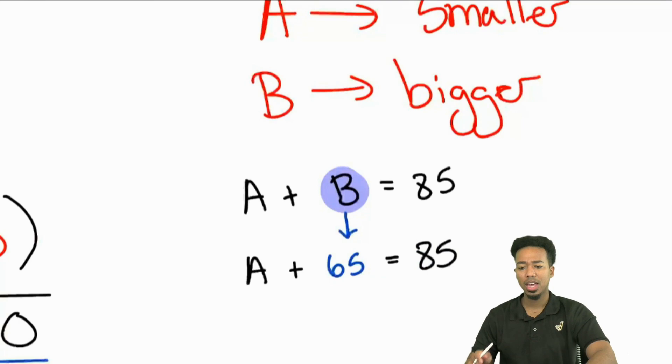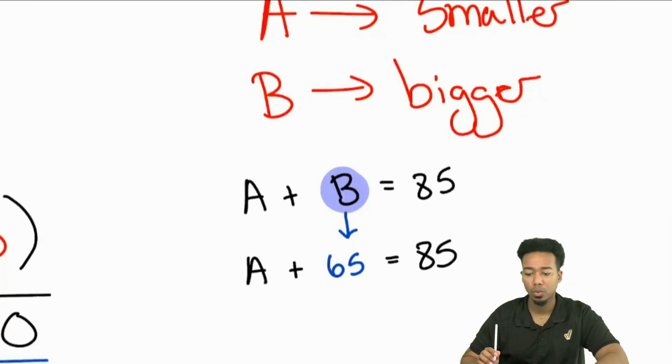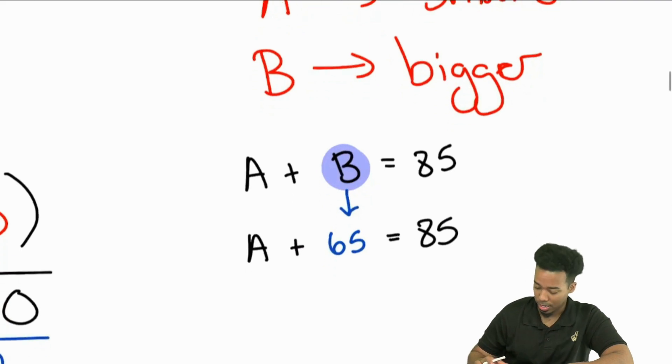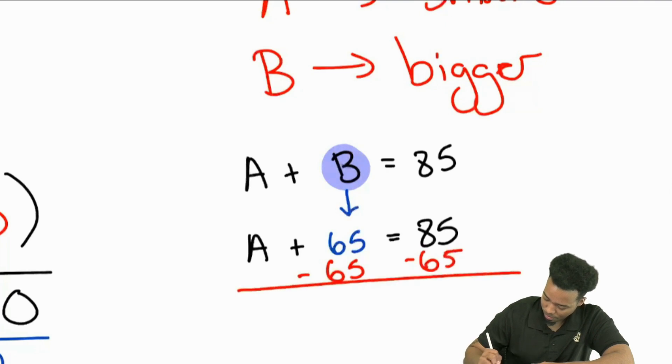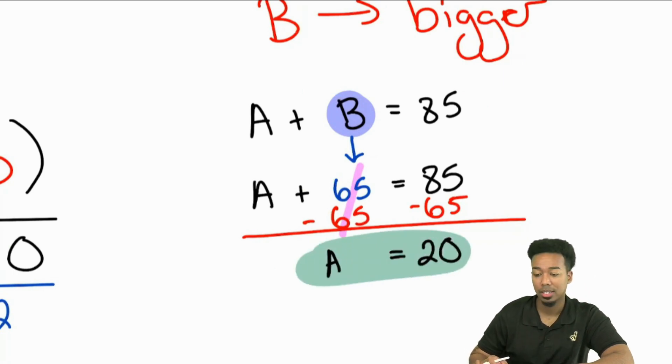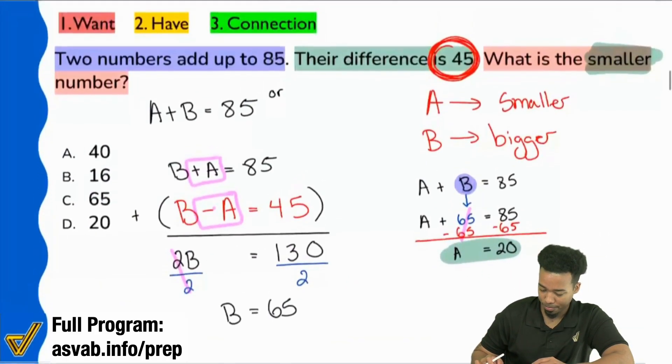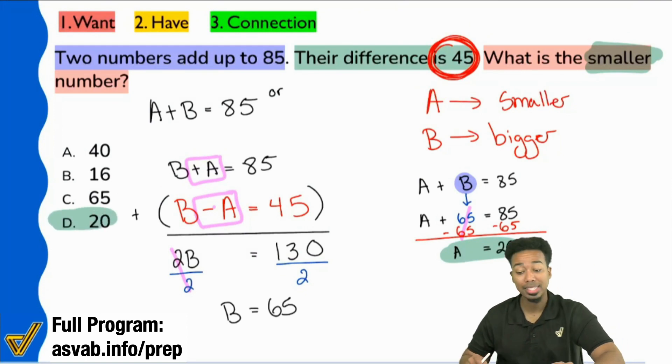Once we're here, what is A going to be? If you're doing some number plus 65 to get 85, what's the missing number going to be? A is the smaller number, so once we take away the 65 from both sides, we get A equals 20. That is our correct answer. That's how we know we're done. D would be the answer here, not C. Not 65, it would be D, 20.